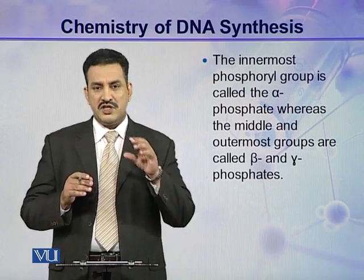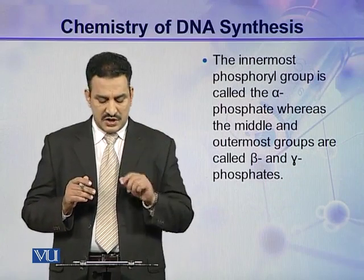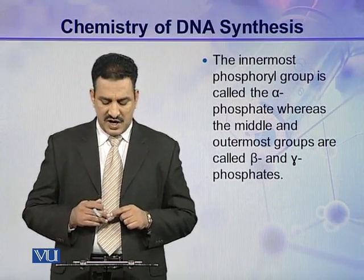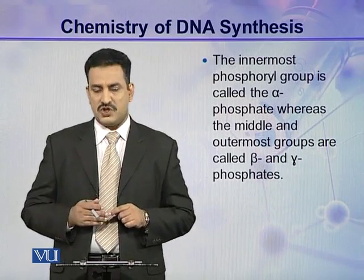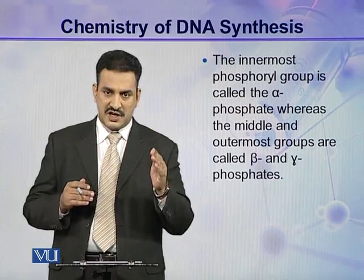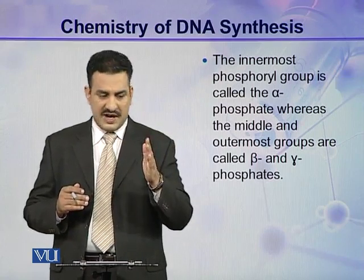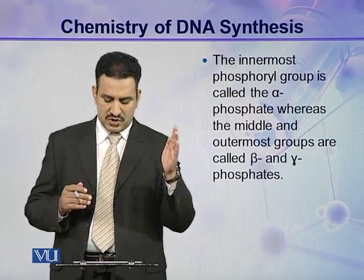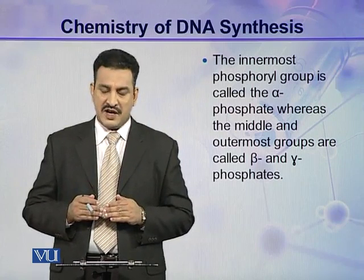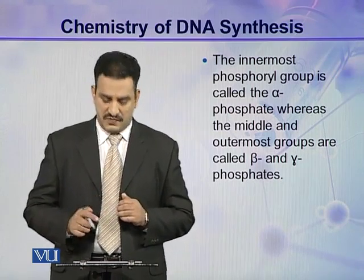In these three phosphates, the innermost phosphoryl group is called the alpha phosphate, while the second and third — that is, the middle and outermost groups — are called beta and gamma phosphates respectively.